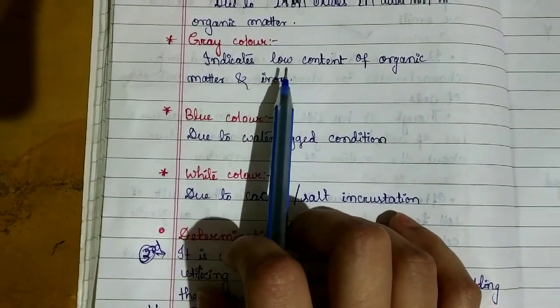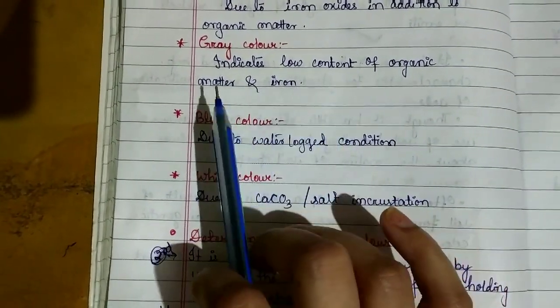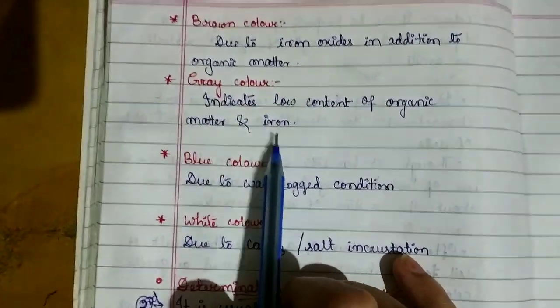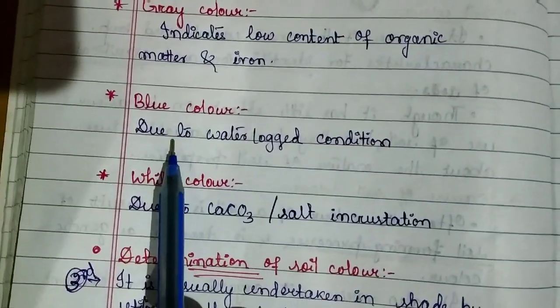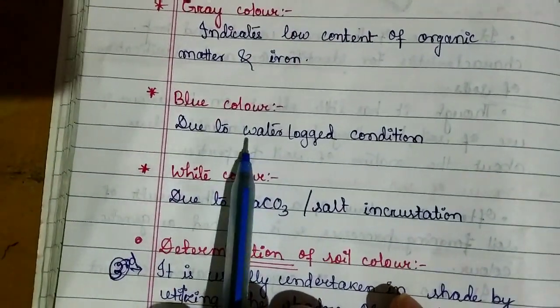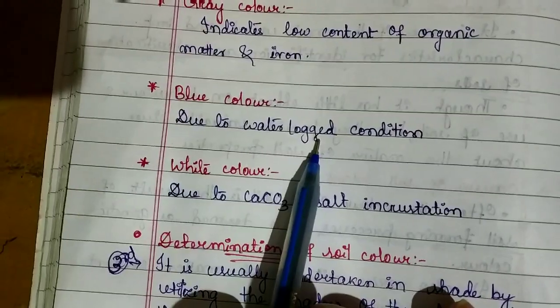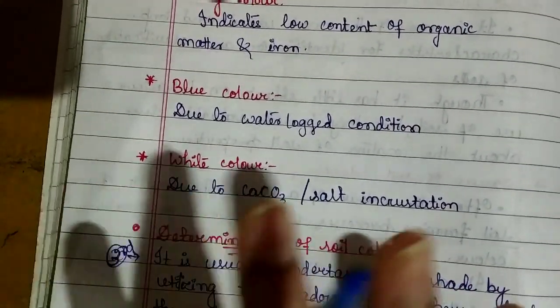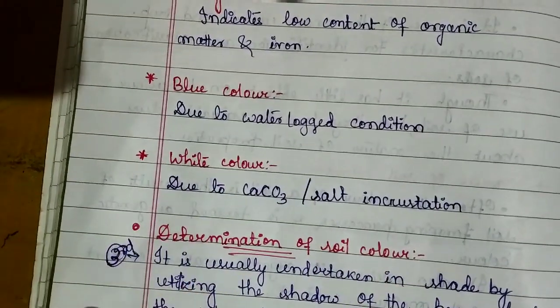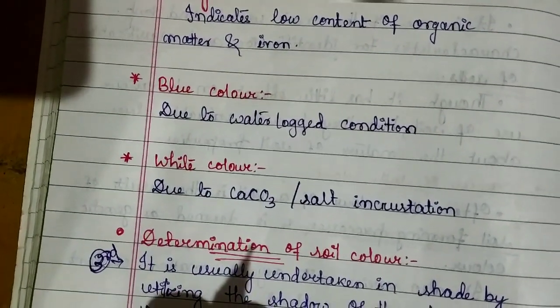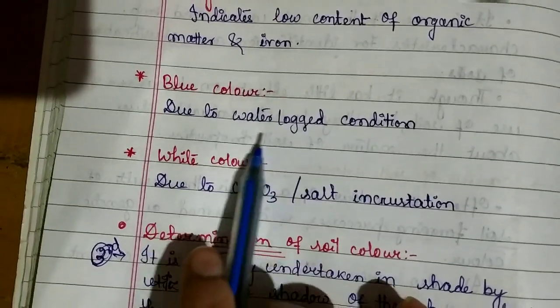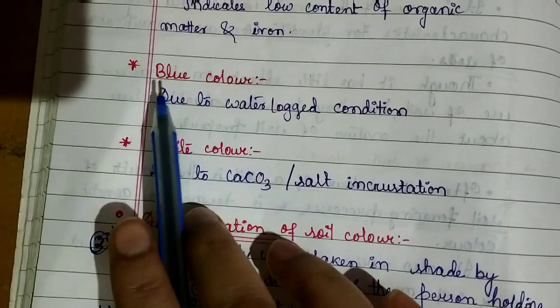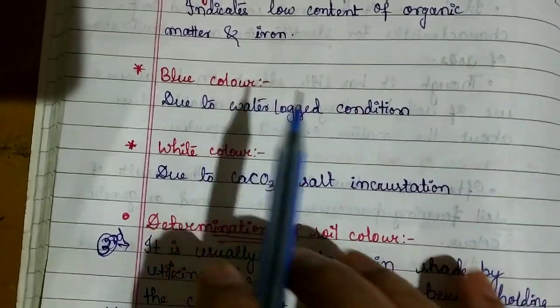Gray color soil is because of presence of low quantity of organic matter and iron. Blue color soil is because of waterlogged condition, where water remains for a long time on the soil. In waterlogged conditions, blue color soil is seen.